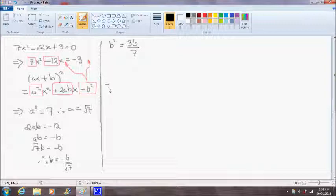So we can rewrite our equation now as 7x squared minus 12x plus 36 on 7 is equal to minus 3 plus 36 on 7.